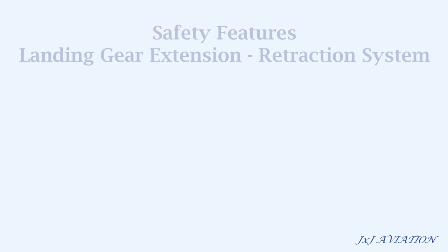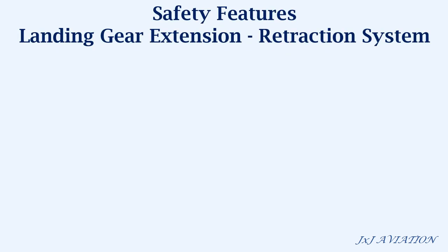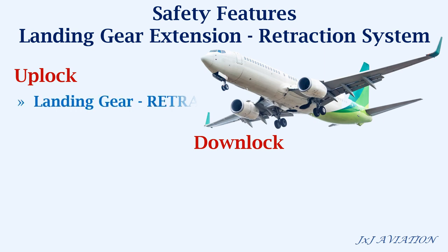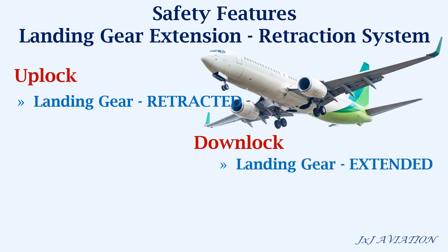Now we will look at some of the safety features on the landing gear extension retraction system. Each landing gear has an up lock and a down lock. The up locks engage when the landing gear is fully retracted into the fuselage, and the down locks engage when the landing gears have fully extended. These locks are important because they lock the landing gear in the required position until a manual extension or retraction command is given by the pilot.